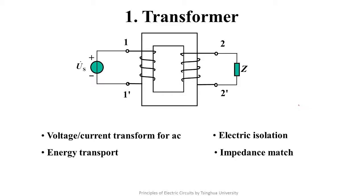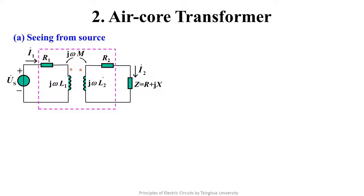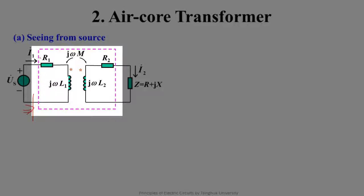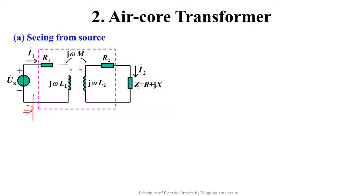We begin to analyze the air coil transformer from three different aspects. First, we look from the power supply side and solve its equivalent circuit. The dotted box in the figure is the electrical model of the transformer, where R1 and R2 are the parasitic resistances of the two coils, L1 is the self-inductance of coil 1, L2 is the self-inductance of coil 2, and M is the mutual inductance. Z = R + jX is the impedance of the load.